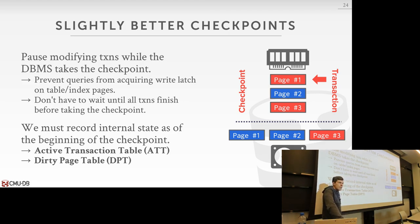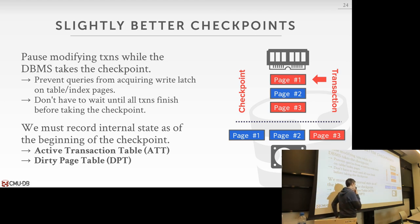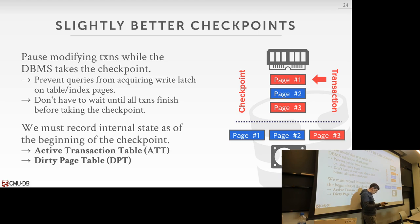Question: since you don't need the ATT and DPT — you just see the log, see which transactions have not committed, and roll them back — wouldn't you not need this metadata? Yes, but that's going to be super slow, because you're going to have to update everything, bringing back every single page and modifying it. Whereas with this metadata we can avoid that. Also, you have to replay the log since the last checkpoint — no, not true, you have to go further back potentially, because you don't know what's been written to disk.